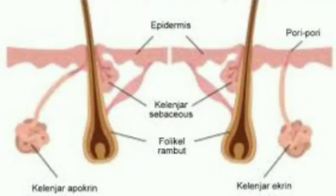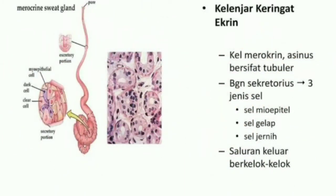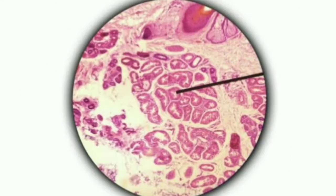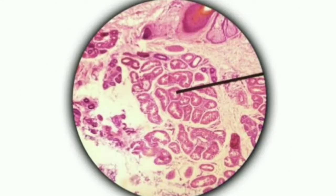Ada dua jenis kelenjar keringat di tubuh, yaitu kelenjar ekrin dan kelenjar apokrin. Kelenjar ekrin menghasilkan keringat yang tidak mengandung protein dan lemak, dan banyak ditemukan di tangan, kaki, dan kening. Sedangkan kelenjar apokrin menghasilkan keringat yang mengandung protein dan lemak. Biasanya kelenjar ini bisa kita temui di ketiak.